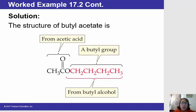So the key in writing this structure is remembering which part of the name comes from which chemical. So butyl is the part that comes from the alcohol. Butyl has four carbons.